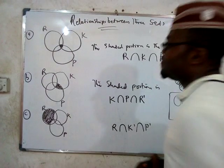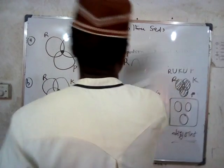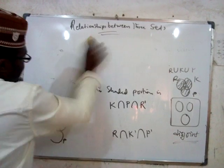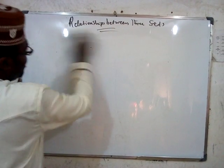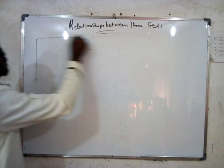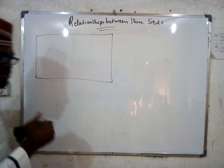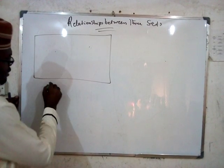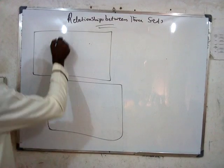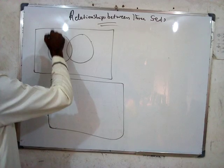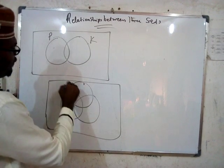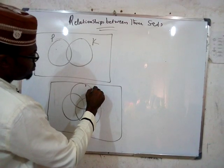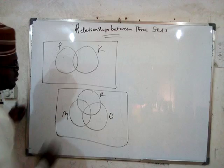Before we move on to the example, we are going to represent two sets and three sets in Venn diagrams, and you are going to tell me where and how to label each. Here is the first one — with sets P and Q. And here is the second one with three sets: R, O, and M.